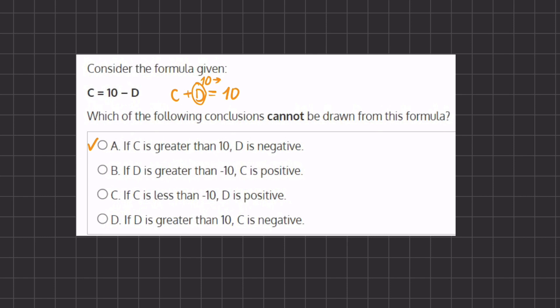And that means that c has to be negative in this case if d is greater than 10. Therefore, b is incorrect and that will actually be our correct answer.